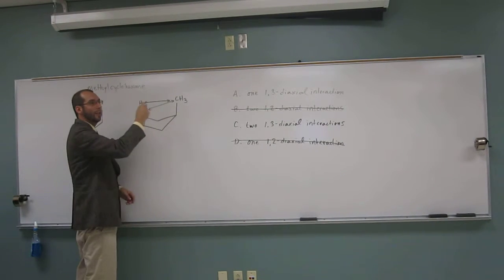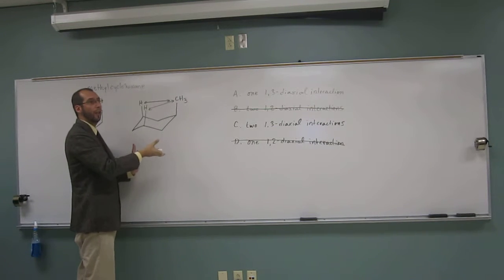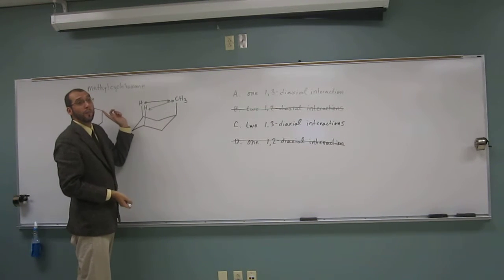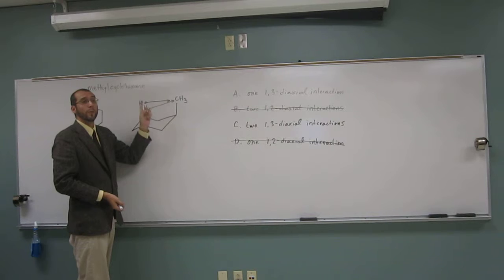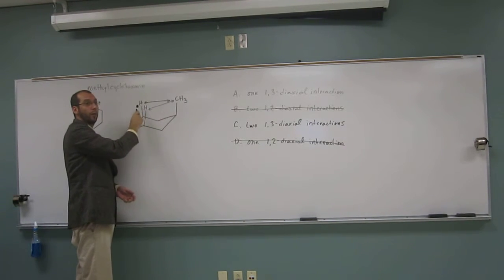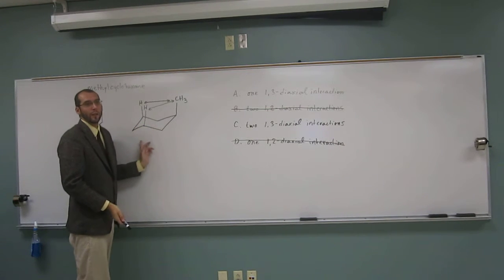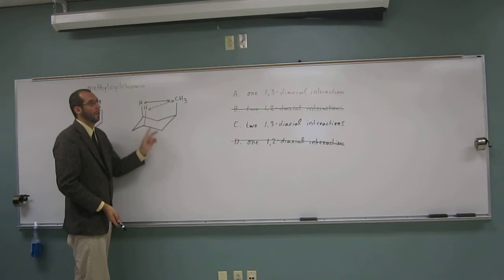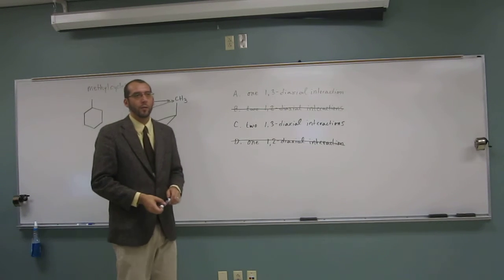It's not saying how many diaxial interactions there are on the whole thing. It says what disadvantage does that methyl group specifically suffer from. Because here we have one, two, and if we wanted to, there would be a third one. But that doesn't have anything to do with methyl group. And the same thing is down here. But again, that didn't have anything to do with methyl group.